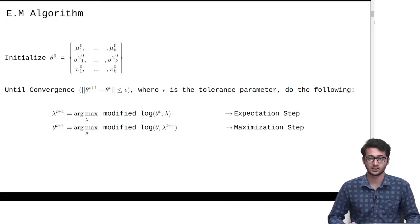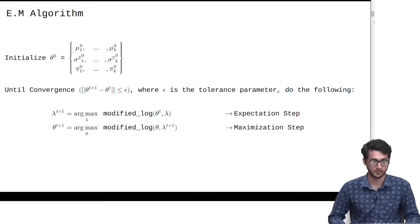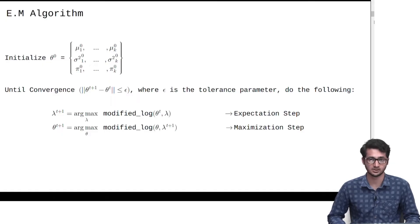Once we get the values of lambda, we are then going to treat these lambda values as constants and perform the maximization step, where we get the new values of the parameters mu, sigma, and pi. Then we repeat these steps until our convergence criterion is satisfied — when the norm of theta_(t+1) minus theta_t is less than the tolerance parameter epsilon, we can say the algorithm has converged.